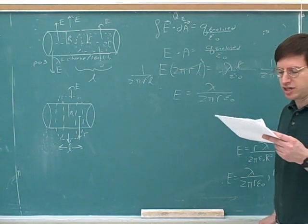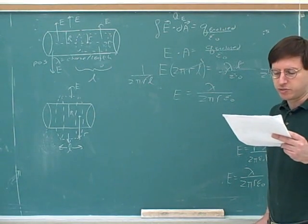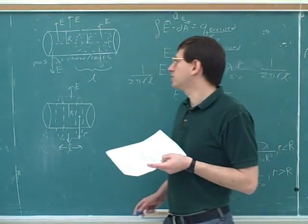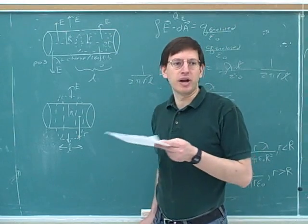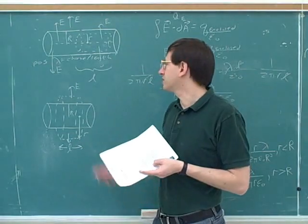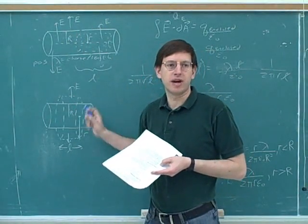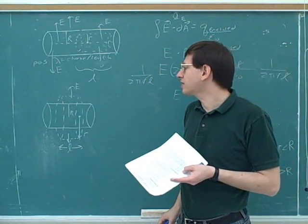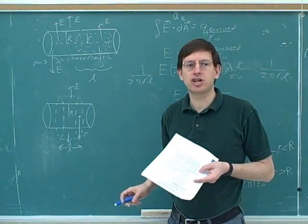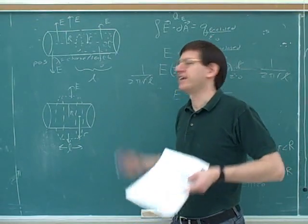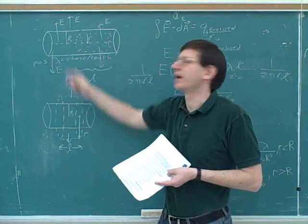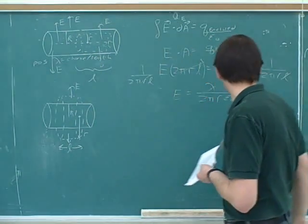Before I forget, one thing we should have mentioned here, notice at the beginning they told us this was an insulating cylinder. What's the significance of that? Well, that means that the charges can stay put where they are. We don't need to worry about them moving. They told us there's a uniform charge. So that means the charges are uniformly spread out throughout the cylinder. If this had been a conductor, it would be impossible for them to be uniformly spread out because in the conductor the charges would all move to the surface. But this is not a conductor. So this is an insulator where the charges can be uniformly spread throughout the entire cylinder. So we've been using that all along.